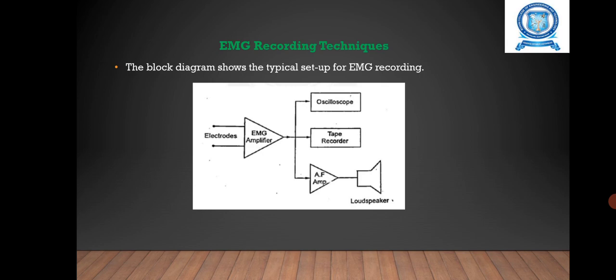The surface electrodes pick up many overlapping spikes and can produce an average voltage from various muscles. The needle electrodes pick up voltage from a single muscle fiber. EMG signals range from 0.1 to 0.5 millivolts with frequency from 20 hertz to 100 kilohertz in audio range.